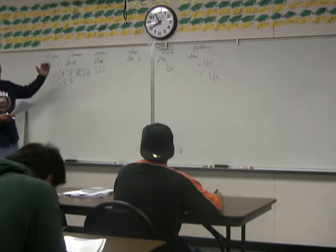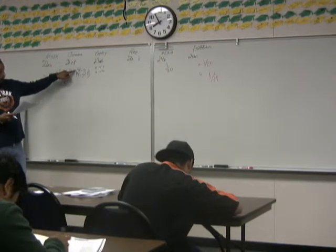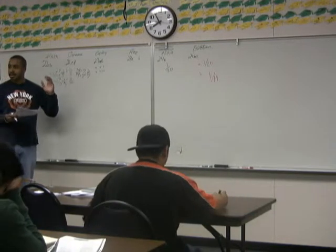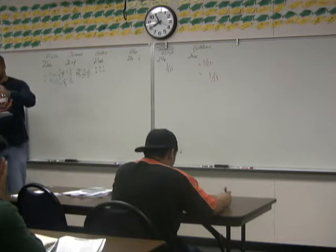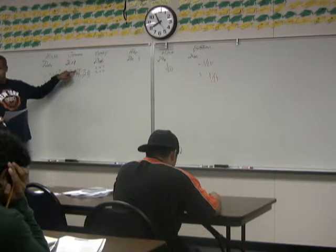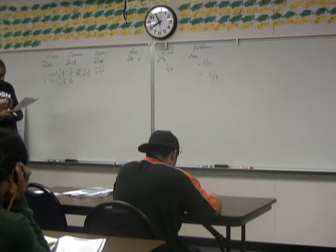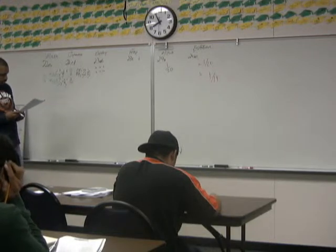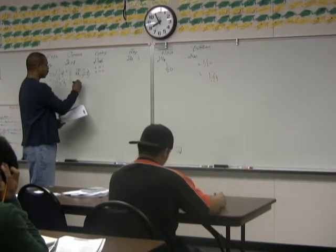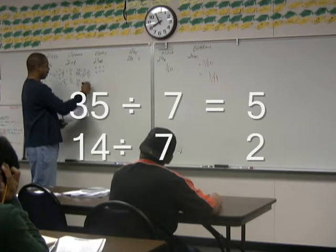The ratio of nonunion workers is 14, and the total number of workers is 49. A very key rule: whatever the question mentions first goes on top; the second piece goes on bottom. And then D: what is the ratio of union workers — 35 — to nonunion workers — 14? Take a 7 out of that and you get 5 to 2.